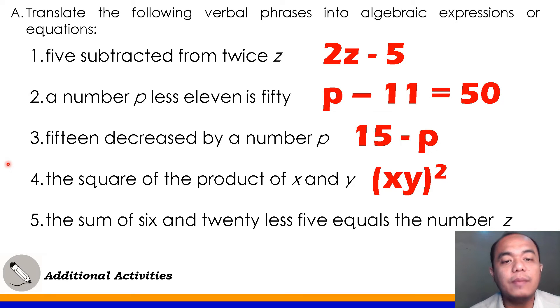Number 5, the sum of 6 and 20 less 5 equals the number Z. It's a bit long, right? Okay, sum, the sum. So, the sum of 6 and 20, so that is 6 plus 20. So you won't be confused, class, put parentheses around it. After that, less. The meaning of less is minus. Very good! And then, 5. And then, equals Z. So, this is the correct answer: 6 plus 20 minus 5 equals Z.